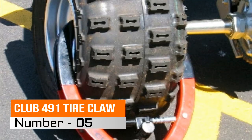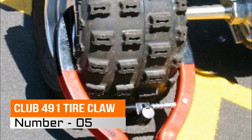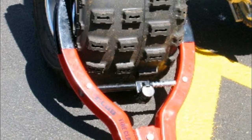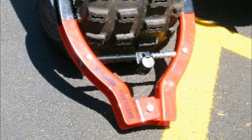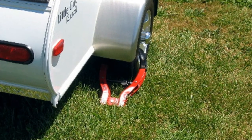Number 5, Club 491 Tire Claw. Universal fit but larger size is ideal for cars, trucks, vans, SUVs, trailers, motorhomes, and much more.